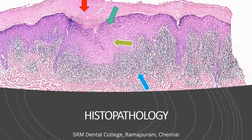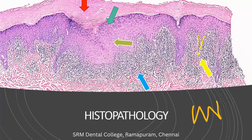The next characteristic finding is a band of inflammatory cell infiltrate. CD8 T cells and apoptotic keratinocytes release cytokines, especially TNF-alpha, which attracts inflammatory components - particularly T lymphocytes. So in the sub-epithelial region, you will appreciate a complete band of inflammatory cell infiltrate composed predominantly of T lymphocytes and histiocytes.